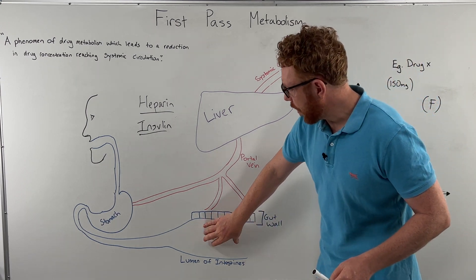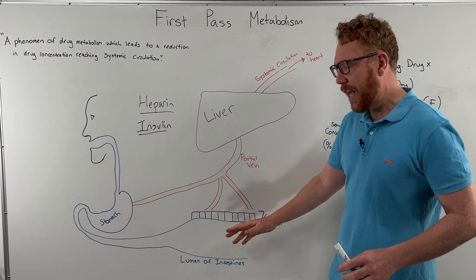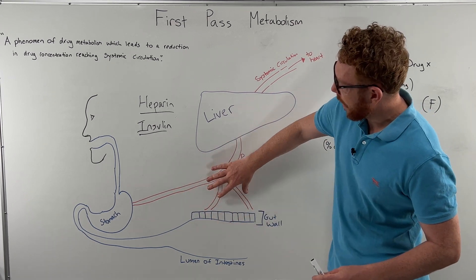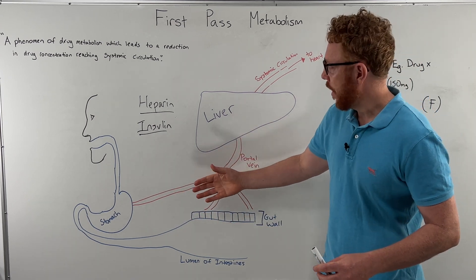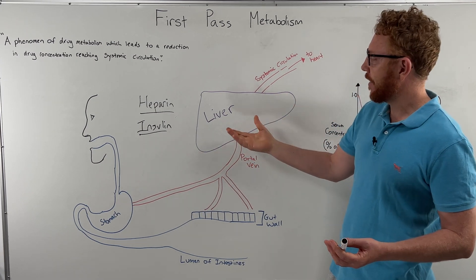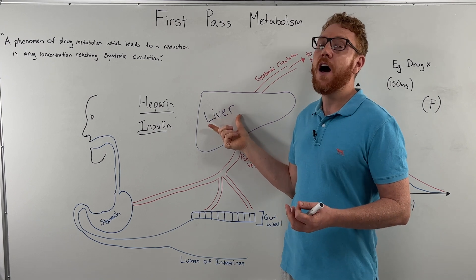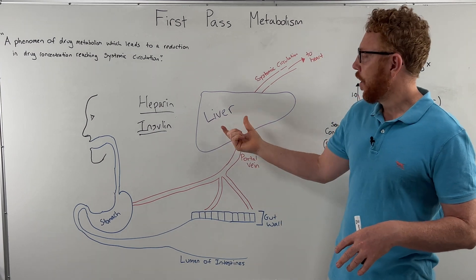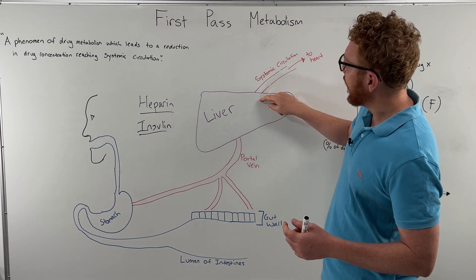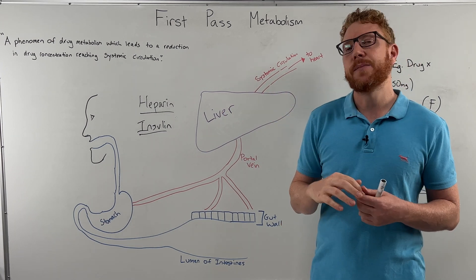But let's say we have good absorption, we have no metabolism in the gut wall, we get a good amount of the drug into the portal vein, and then it gets taken to the liver. But in this case, let's say the drug is highly metabolized by the liver, which means it's metabolized so strongly, the liver doesn't allow much of the drug into the systemic circulation.